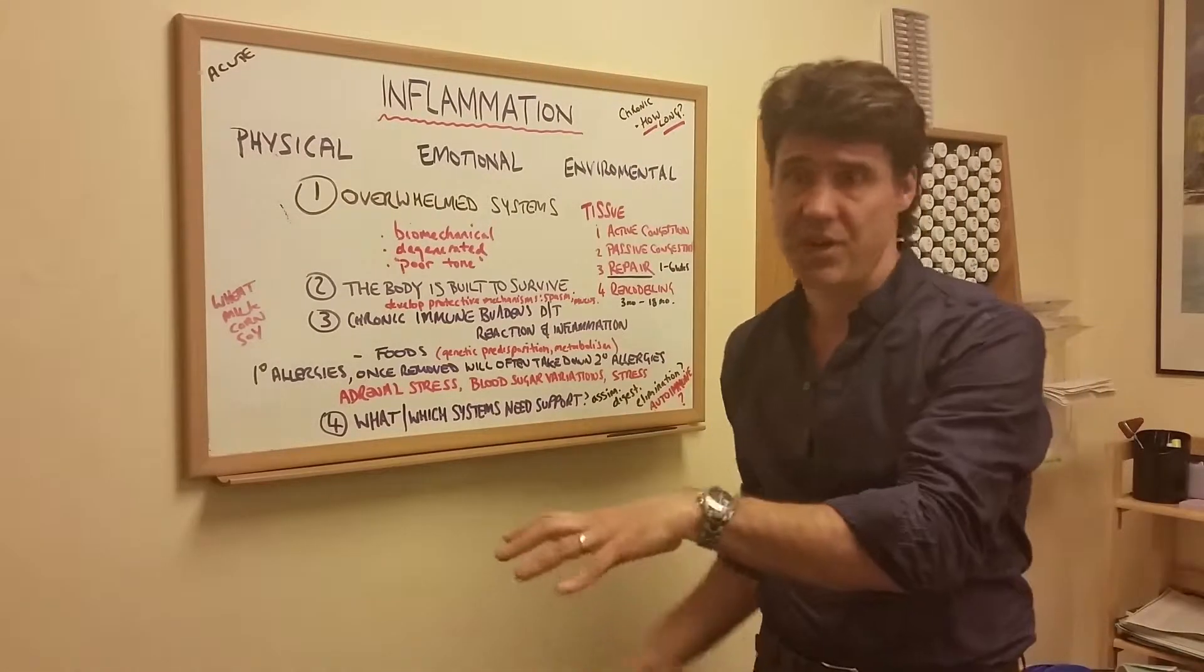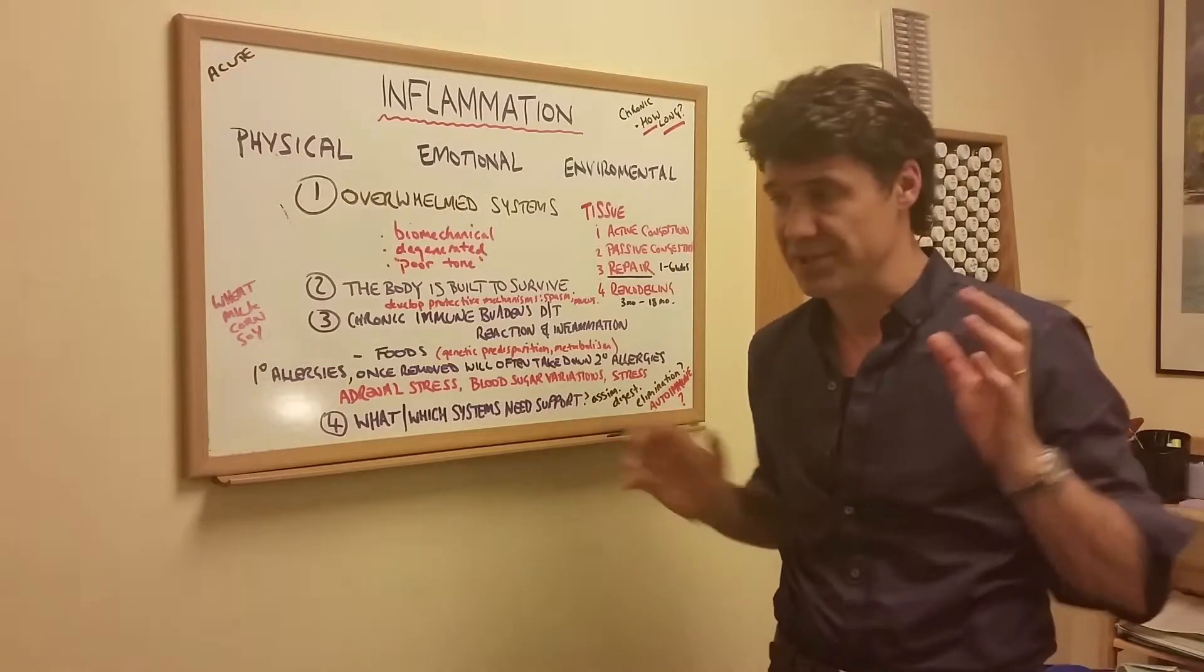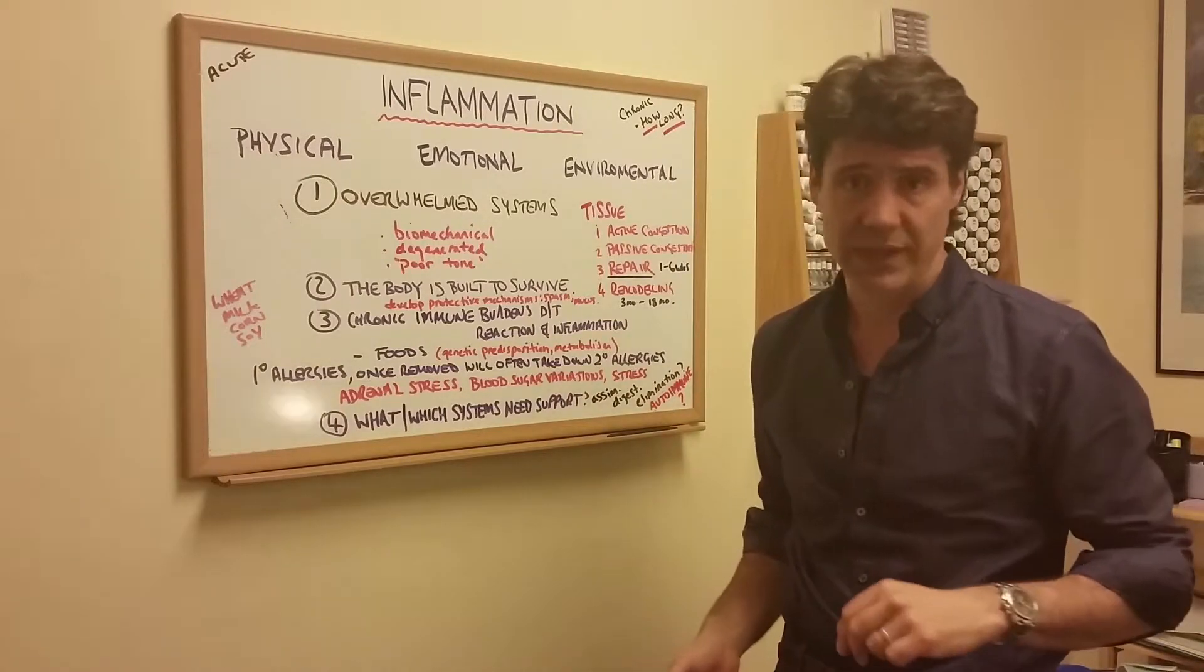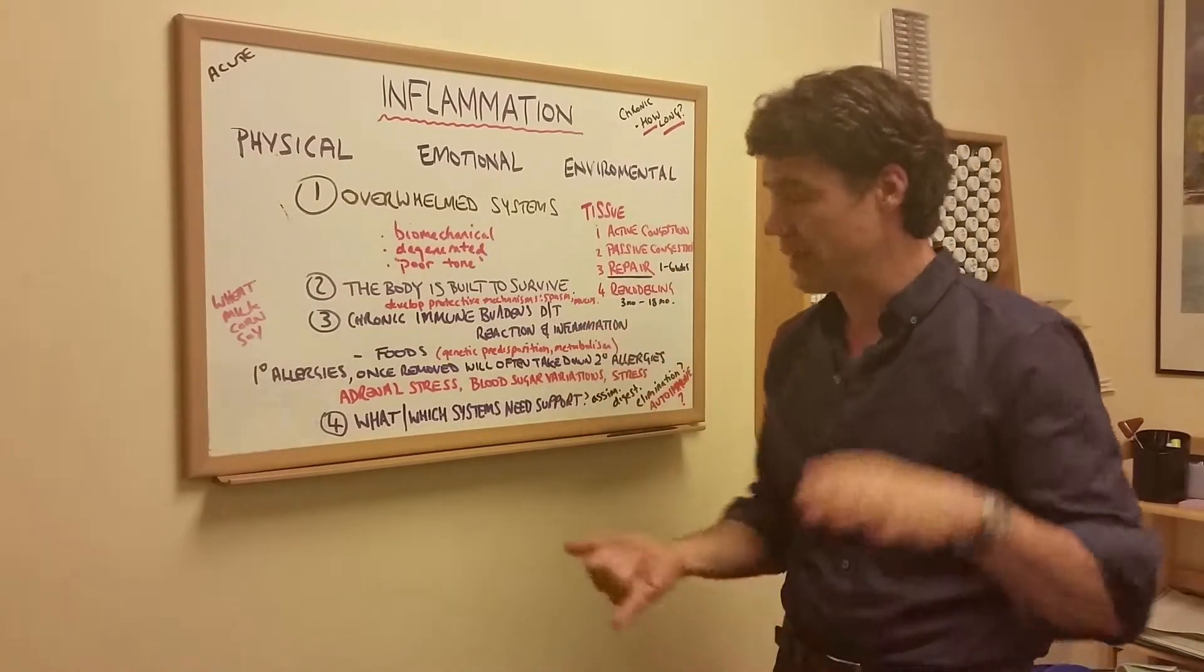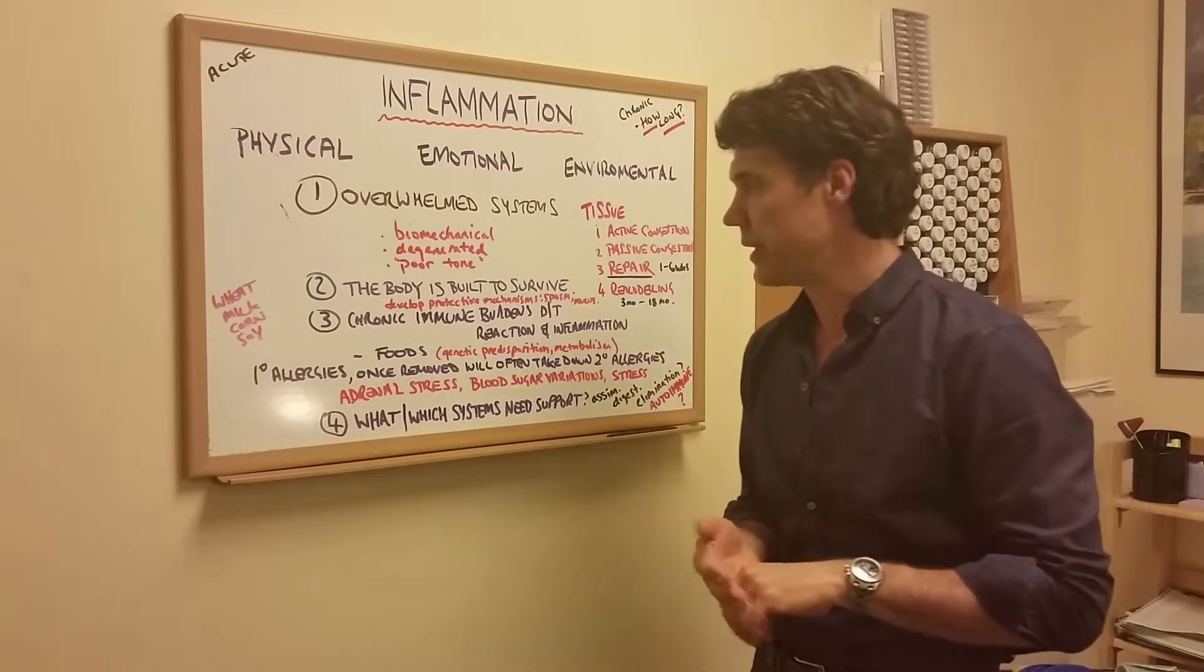Now we can either suppress it with drugs. Great, suppress it. Don't care about fixing the problem. Let's just suppress it. That's one way of doing it. Another way is to start looking at, okay, why is the muscle in spasm? Why are we creating more mucus? What system needs to be supported?